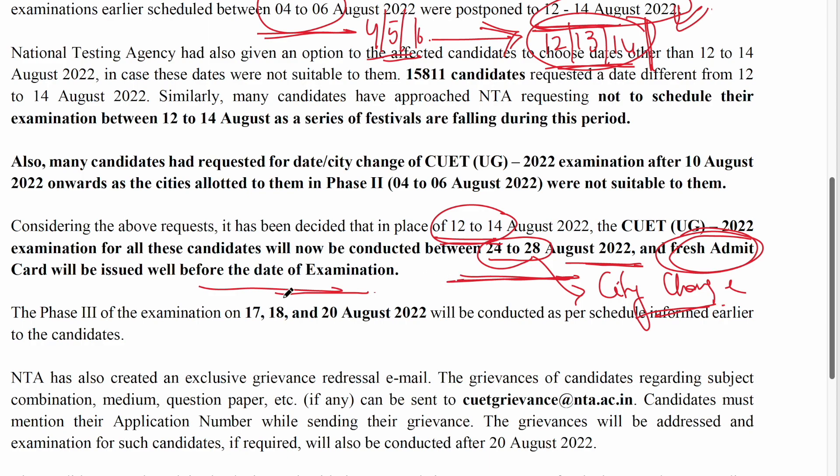This is not for all students — only those who have different districts, cities, or particular exam situations where the exam was not going to be completed. The exam of Phase 3 is conducted on the 17th, 18th, and 20th of August.